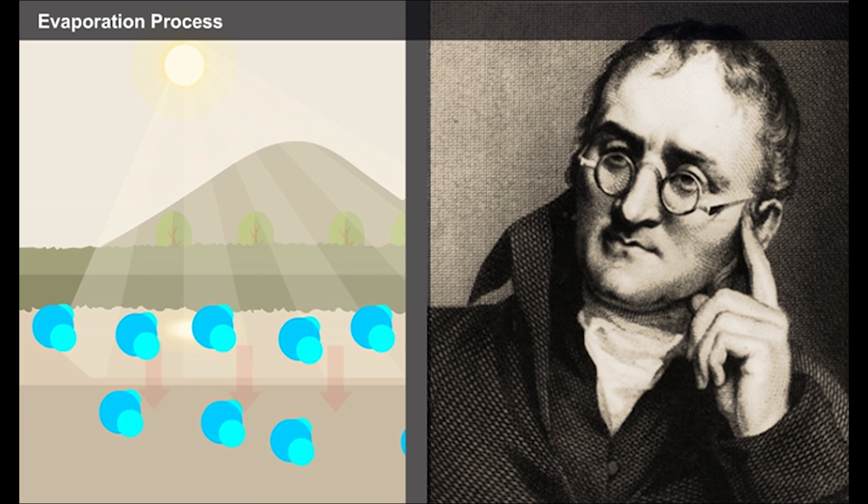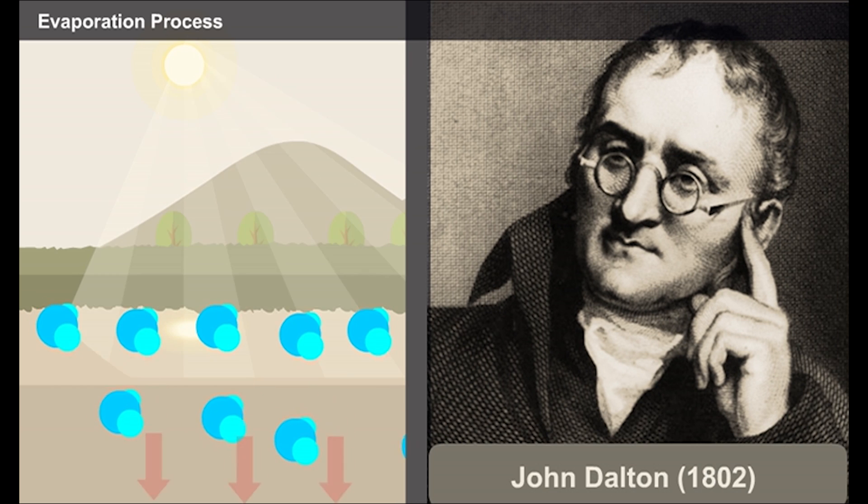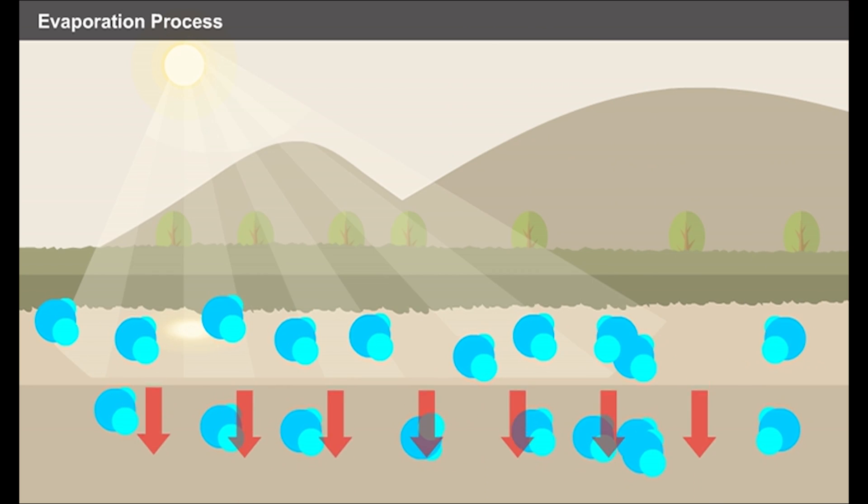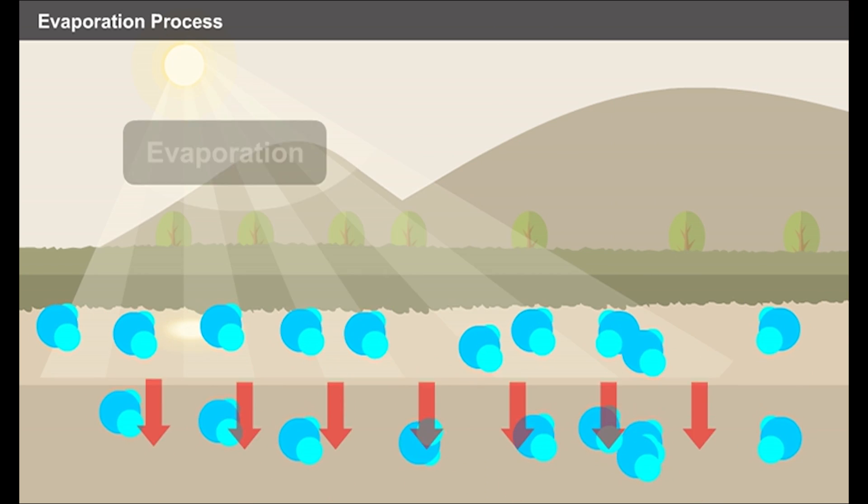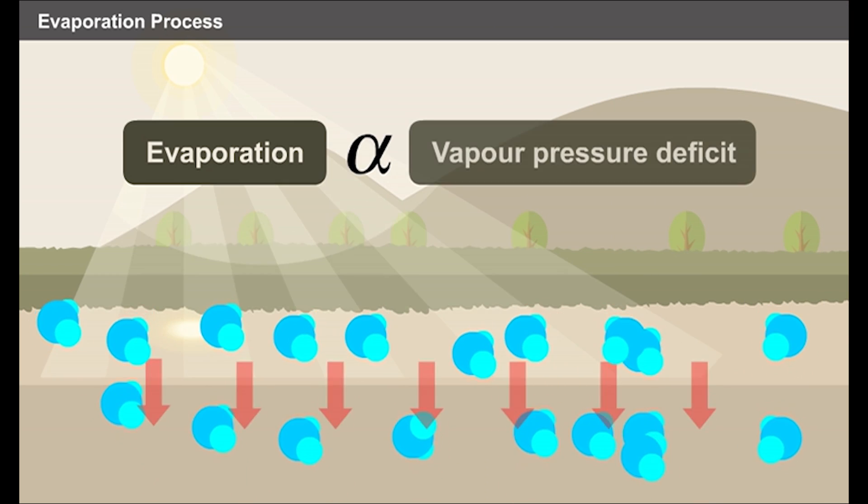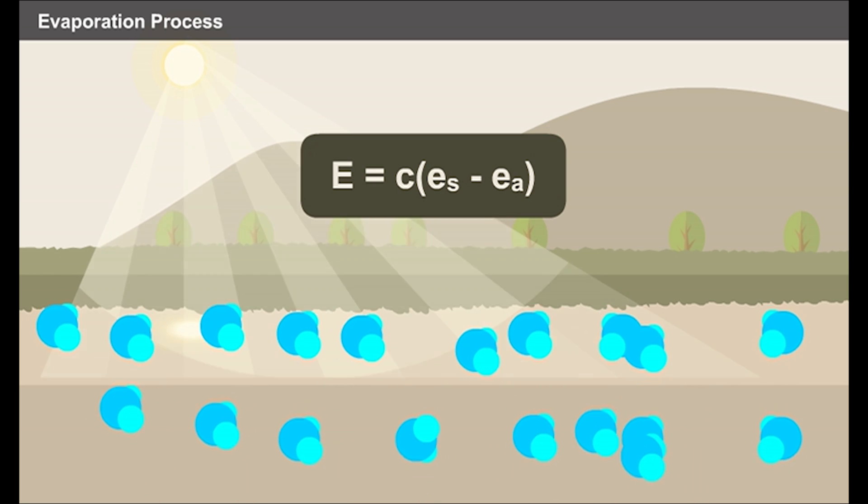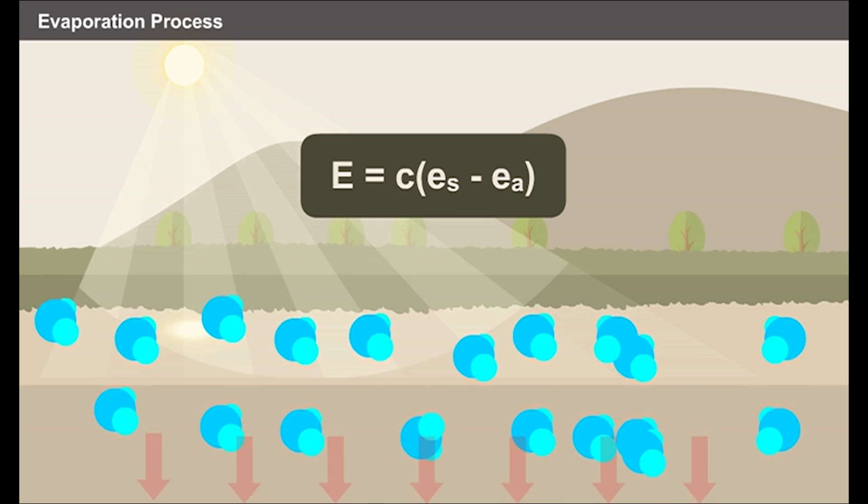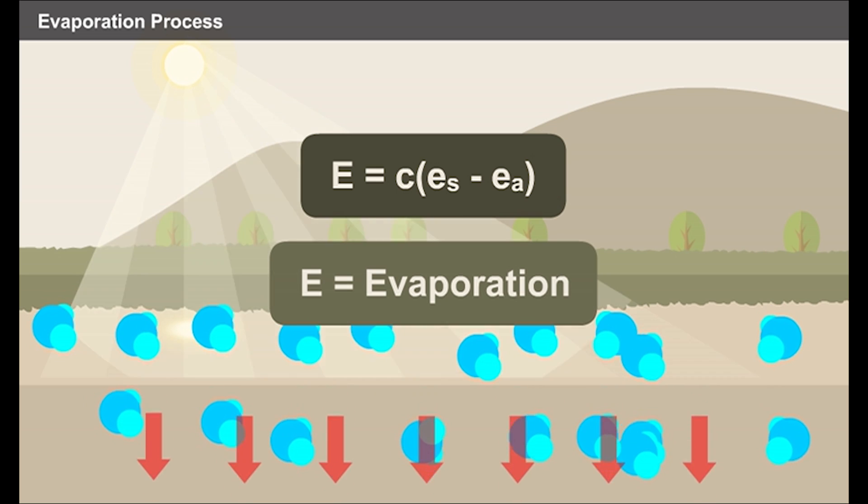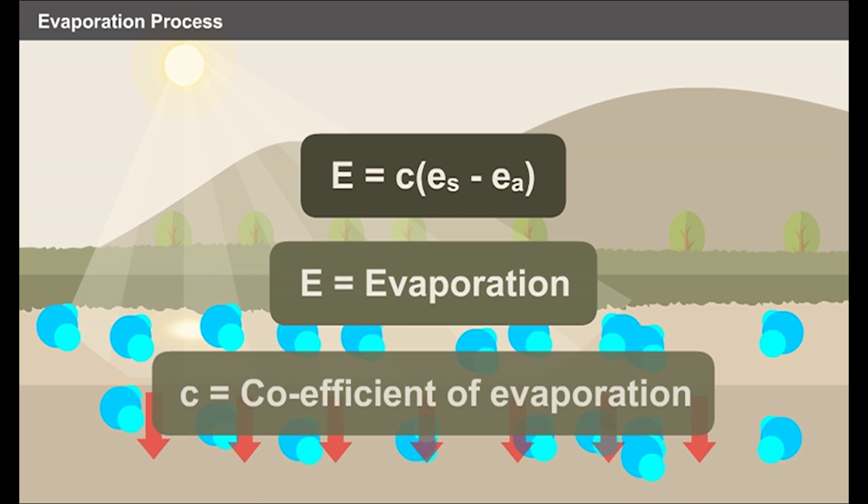This was clearly described by a scientist named John Dalton in the year 1802. Under favourable conditions, evaporation is proportional to the vapour pressure deficit. That is, E is equal to C into ES minus EA, where E denotes evaporation and C represents the coefficient of evaporation. This law is commonly stated as Dalton's law.